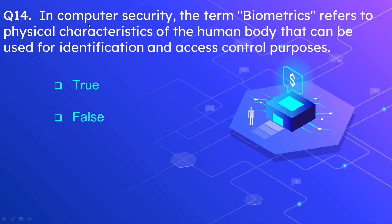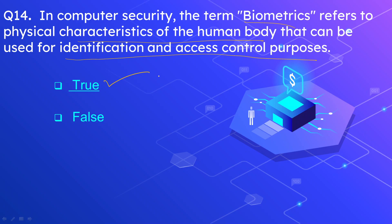Question number 14: In computer security, the term biometric refers to physical characteristics of the human body that can be used for identification and access control purposes. Is this statement true or false? The correct option is true — biometrics are characteristics of the human body used for identification and access control, such as fingerprints and retina scanning.